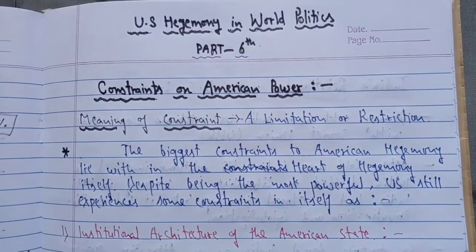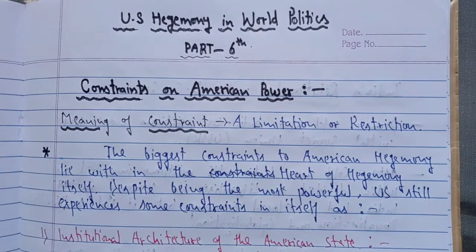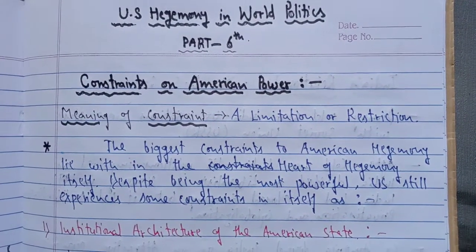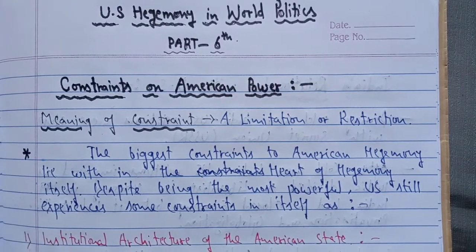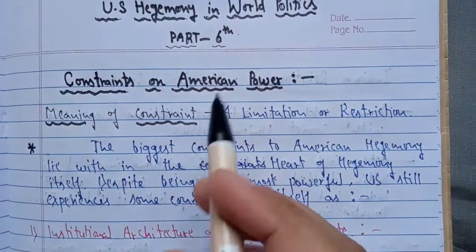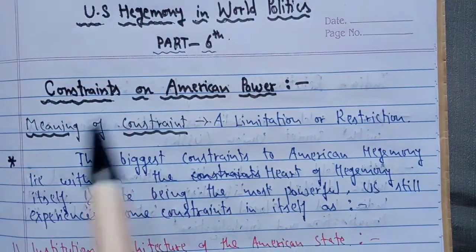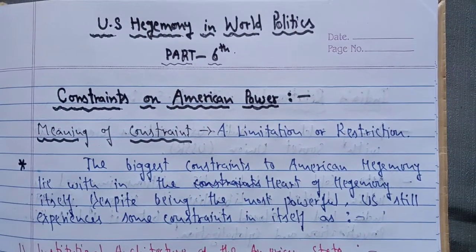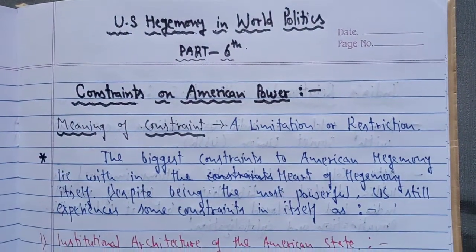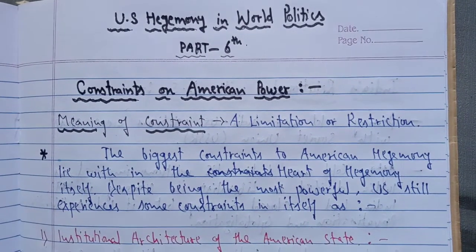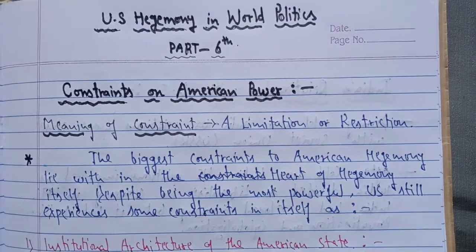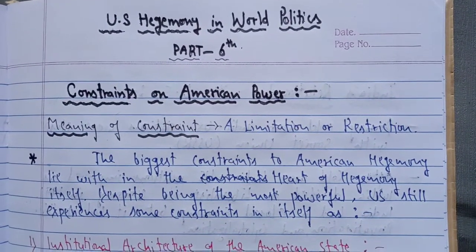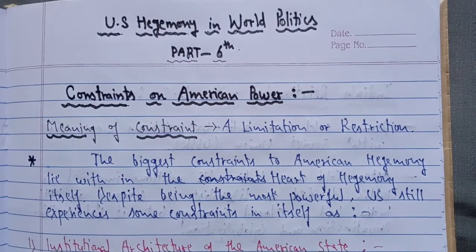Good morning to all the students of Class 12th Political Science. We were continuing with the third chapter, that is US Hegemony in World Politics. We had finished five parts and now I am starting with the sixth part. Before I start the topic — constraints on American power — I would like to recap that in Part 5 we read about the hegemony of America as a hard power, as structural power, and as soft power, after the disintegration of the USSR in 1991.